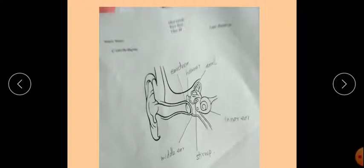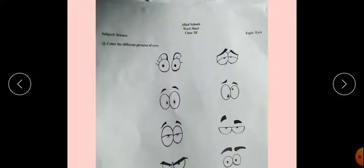Next worksheet is color the different pictures of eyes. Here are different pictures of eyes. You have to just color these different pictures of eyes.